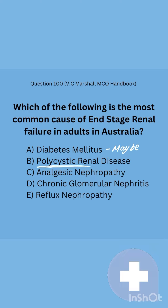Option B is polycystic renal disease. This is a structural, inherited — usually genetic — condition. It's safe to assume it probably won't be the most common cause overall, because acquired lifestyle diseases will always be more common than genetic conditions. So I'd probably exclude this answer.